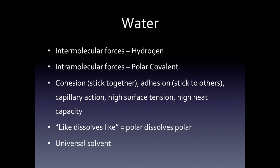Hydrogen bonding is the weakest type of bonding and is mainly found in water. Water is very important for the AP Bio exam and you should know all its properties. Intermolecular forces are forces between water molecules, while intramolecular forces are forces within the water molecule itself. Intermolecular forces in water are hydrogen bonding — occurring between different water molecules — while intramolecular forces are polar covalent, since H₂O is polar covalently bonded. These two bond types give water its unique properties.